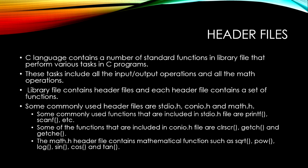Some functions included in conio.h are clrscr, getch, and getche. The math header file contains mathematical functions, for example: pow, log, sin, cos, and tan. In order to use library functions, the programmer must include the appropriate header files at the beginning of the program.